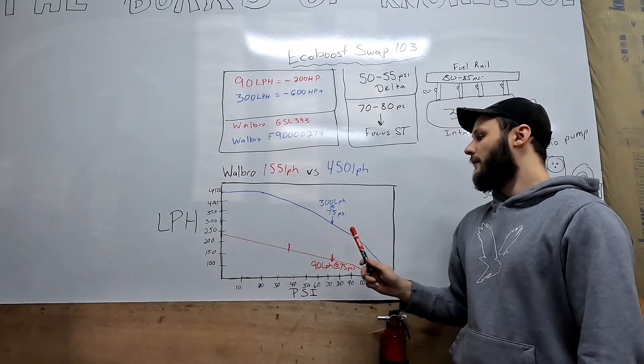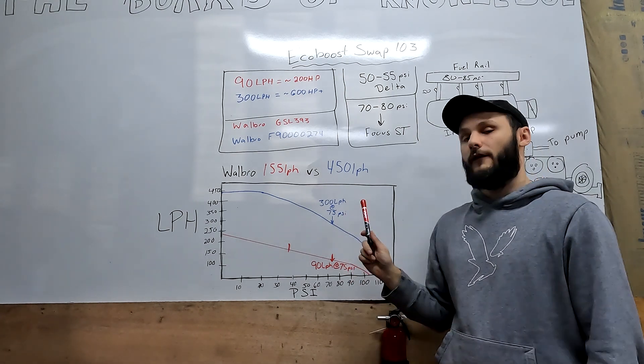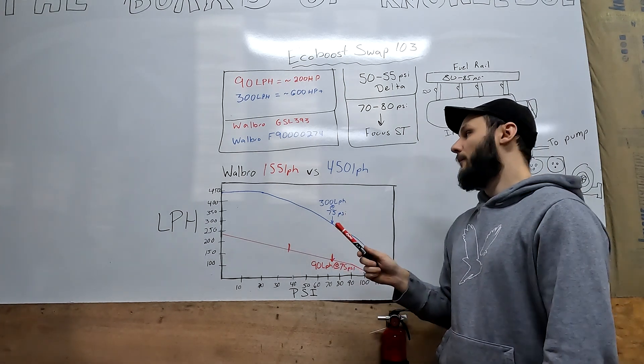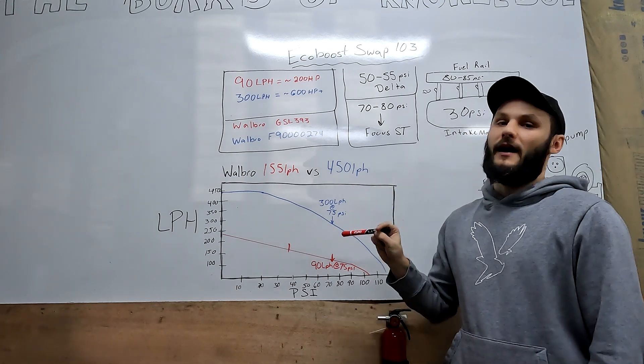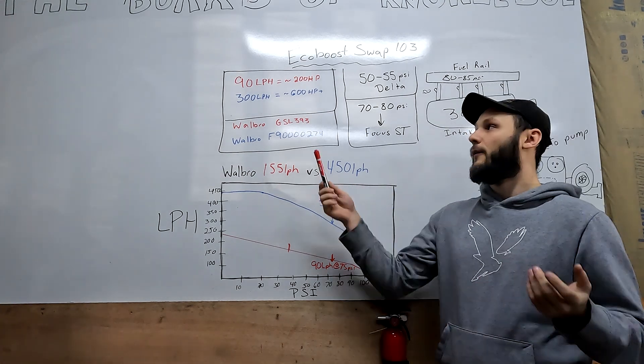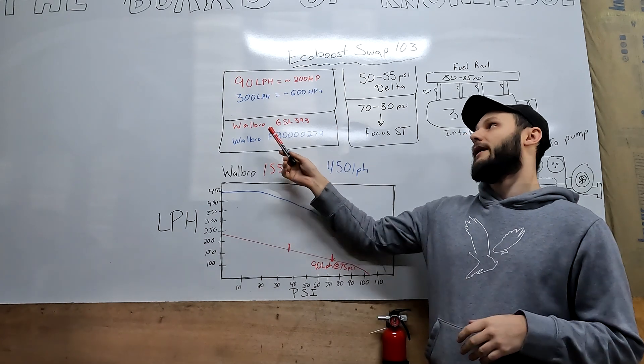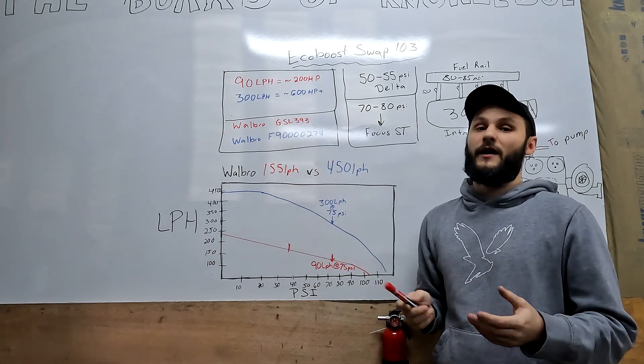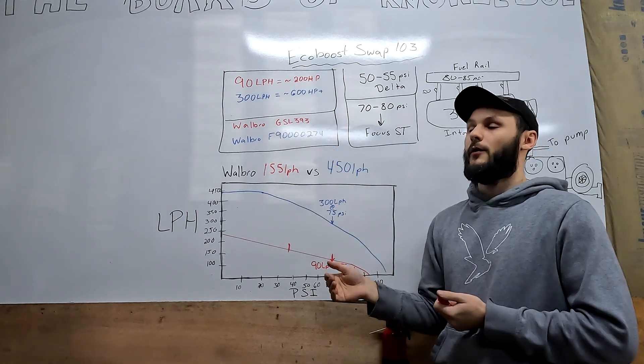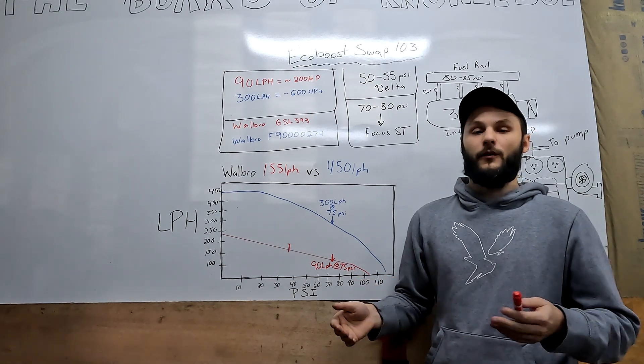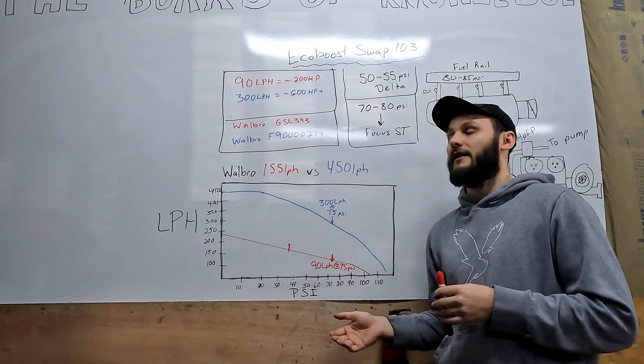and follow its line down, at 75 psi this pump is still flowing 300 liters per hour because this is meant to be a high pressure pump. That 300 liter per hour flow rate is good for about 600 horsepower. That's good headroom for if anything else were to go wrong. If the pump slows down a bit and you're flowing less fuel, you're not going to lean out and blow up the engine.